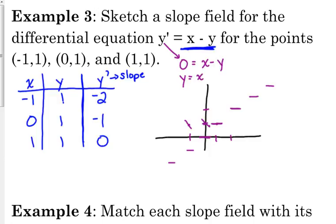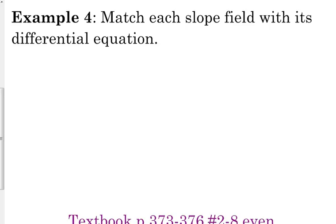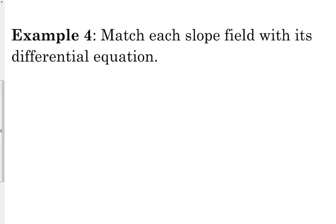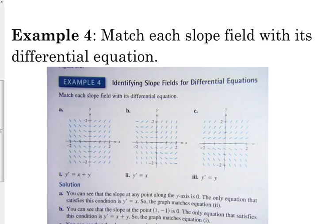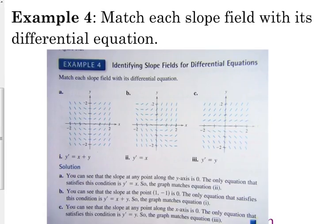Let's look at example 4: match each slope field with its differential equations. When trying to match these, the easiest things to pick out are when the slope is 0. For example 2, when x is 0 we're going to have a slope of 0. So which one of those pictures, when the x coordinate is 0, always has a slope of 0? The answer is A — everywhere that x is 0, we have horizontal segments.